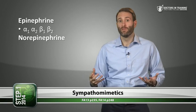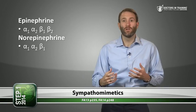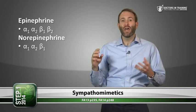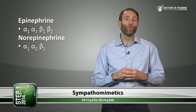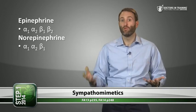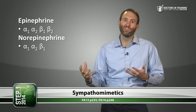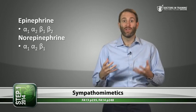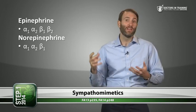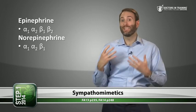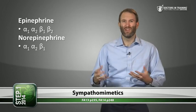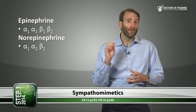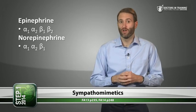Norepinephrine has strong alpha-1 and alpha-2 stimulation, with maybe a little beta-1 but not much beta-2. It can be used for hypotension but may decrease renal perfusion due to vasoconstriction. Norepinephrine is usually first-line for septic shock, where significant vasodilation needs correction, and can also be used for cardiogenic shock.